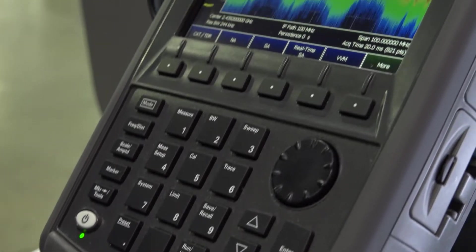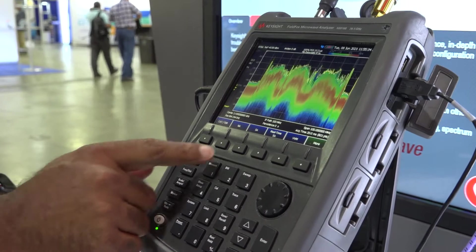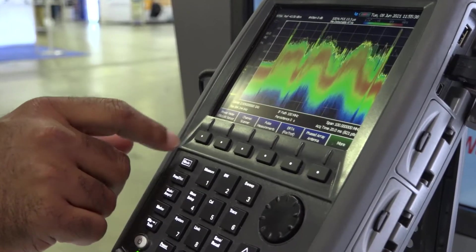One of the real powers of this analyzer is the fact that you can switch between different modes. So we can go between cable antenna test mode, network analyzer, spectrum analyzer, real-time vector voltmeter, and power meter.